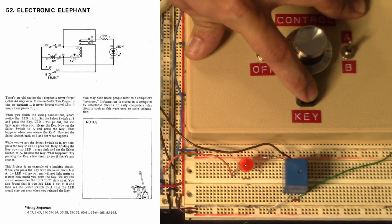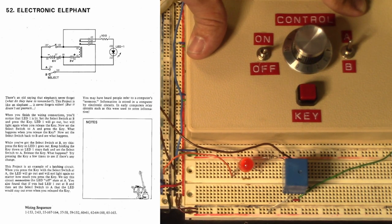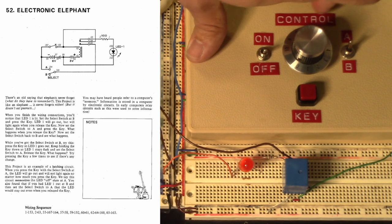This project is an example of a latching circuit. When you press the key with the select switch at A, the LED will go out and will not light again no matter how much you press the key. We say this circuit memorizes the LED off state at A.